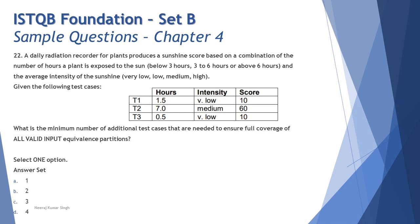They're asking what's the least number of test cases to achieve everything. They've got three test cases here: T1, T2, and T3. What more would they need to have everything covered? We have three categories for plants exposed to sun and four categories for intensity. If I see T1, it says 1.5 hours which falls under the first category below 3 hours, and intensity is very low.